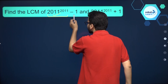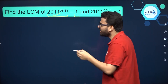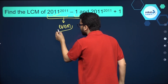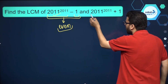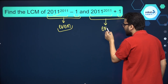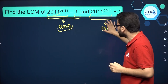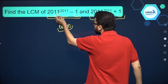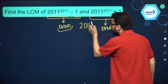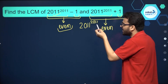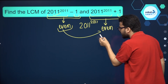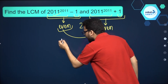You're taking an odd number an odd number of times, so it is an odd number. This odd number minus one will be an even number, and in the same manner, this odd number plus one is also an even number. So basically you will see that these are consecutive even numbers: 2011^2011 minus one, then 2011^2011, and then 2011^2011 plus one.